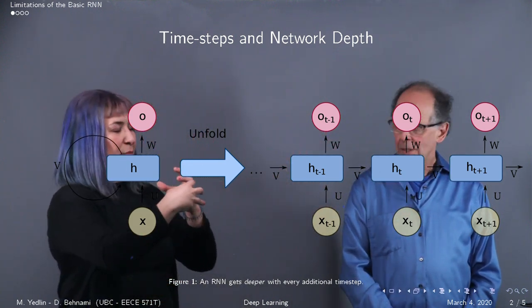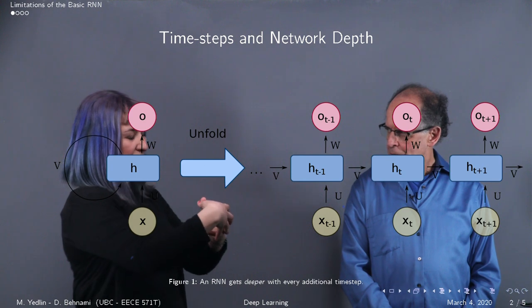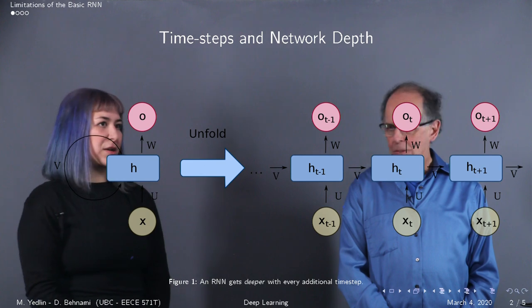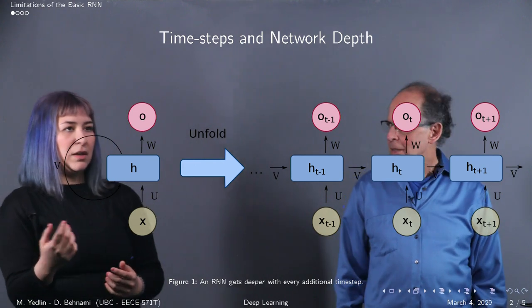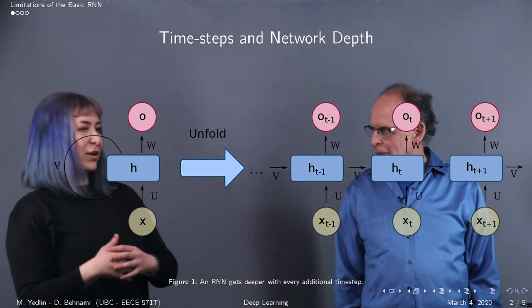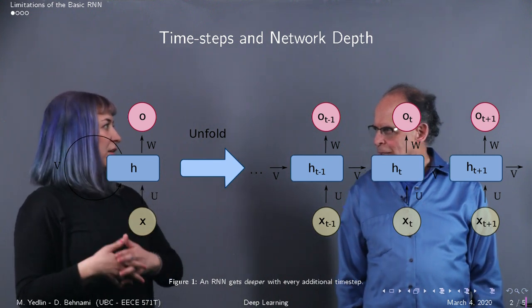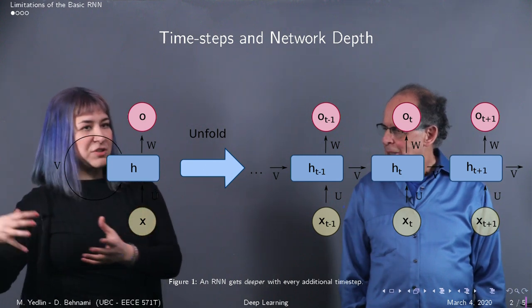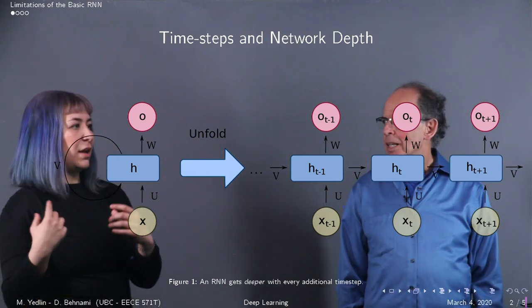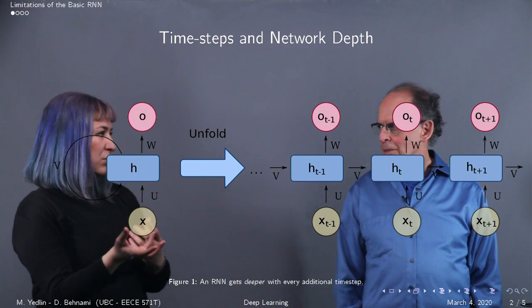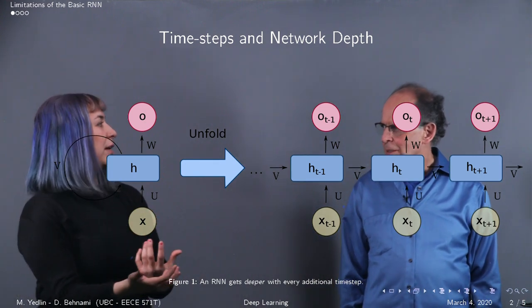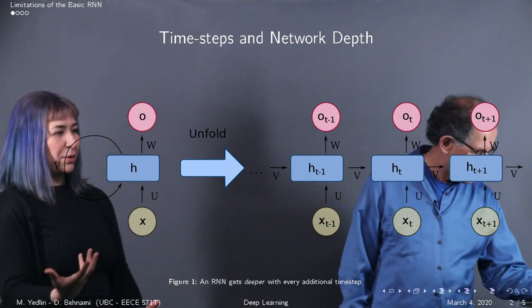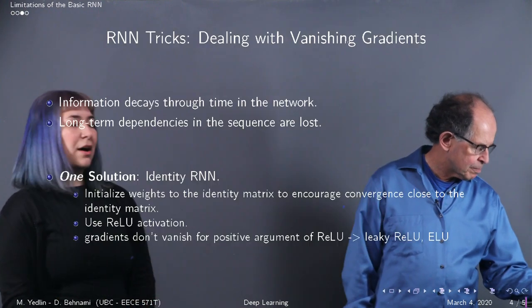So that's assuming that the sequential data has some sort of uniformity. So we share the parameters there. And the problem here is, as with other neural networks, the more layers you have, the harder it will become for the network to remember information from the earlier on stages. And that has to do with the whole vanishing and exploding gradient issues. So let's look a little bit more closely at how that unfolds in RNNs and how we can resolve it.